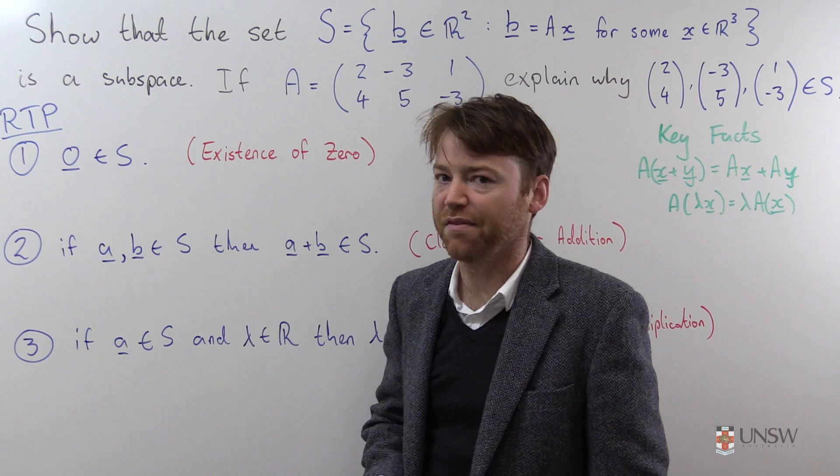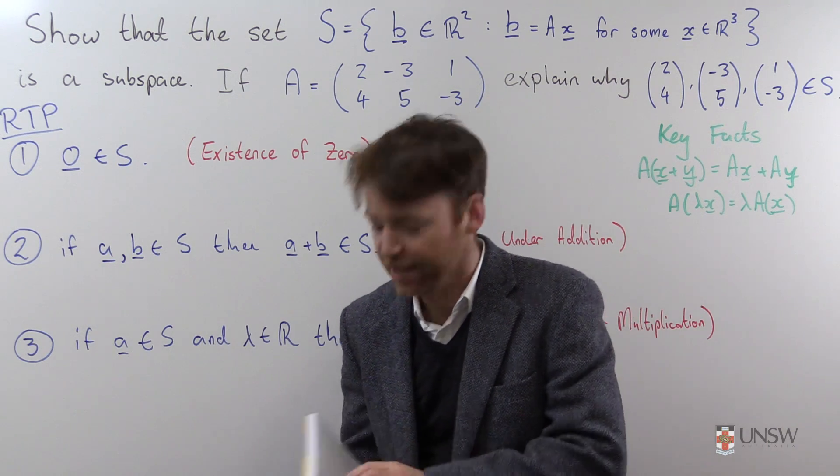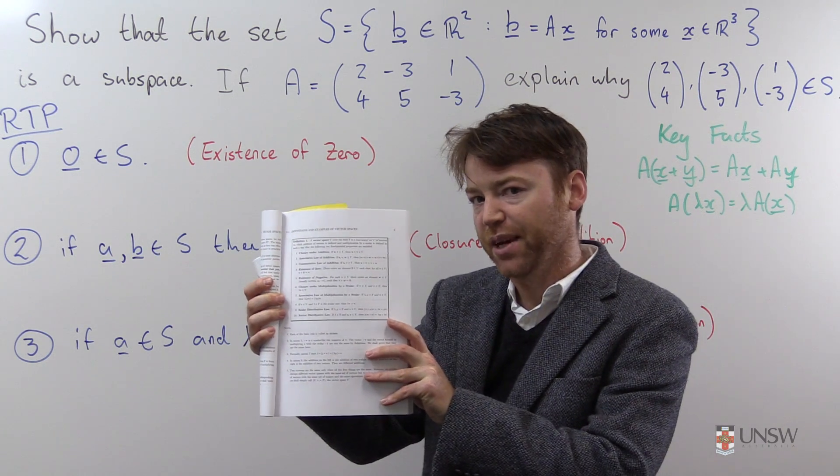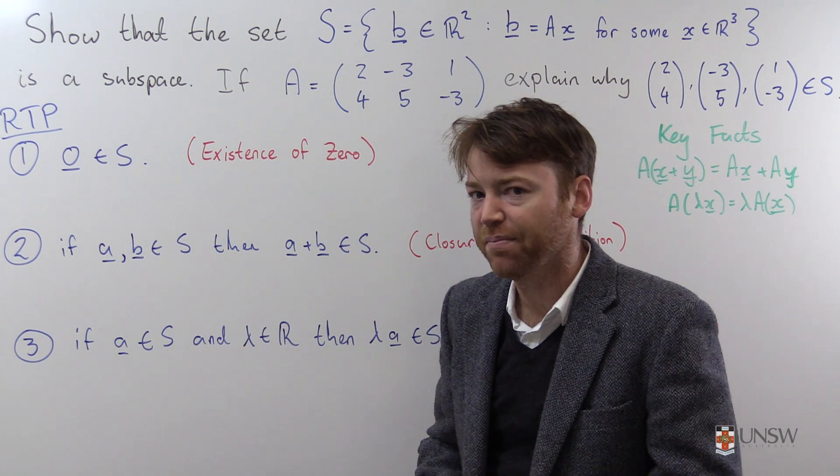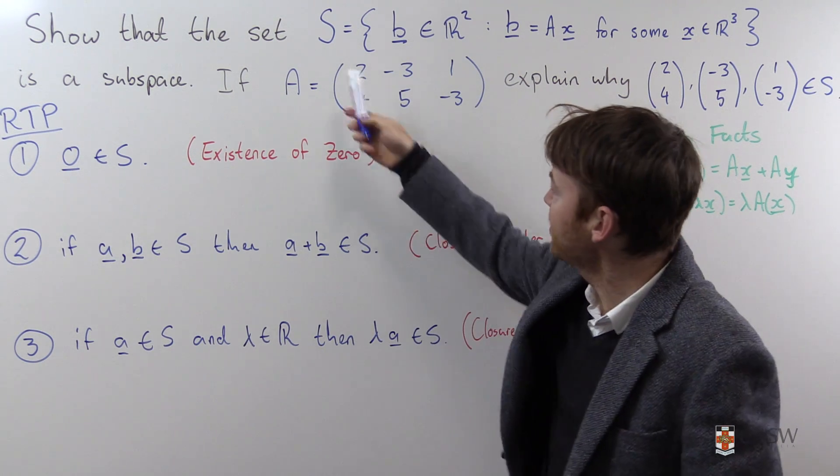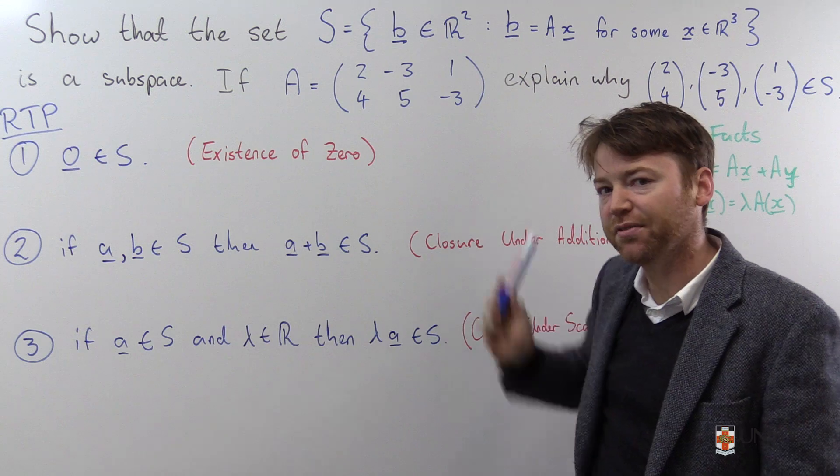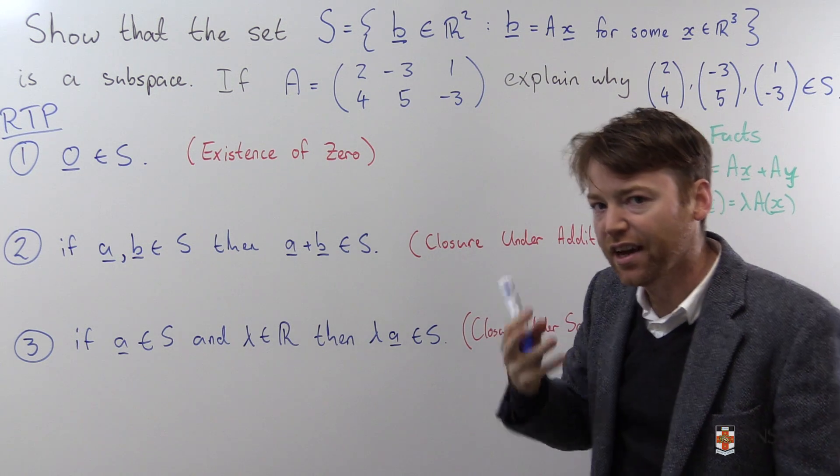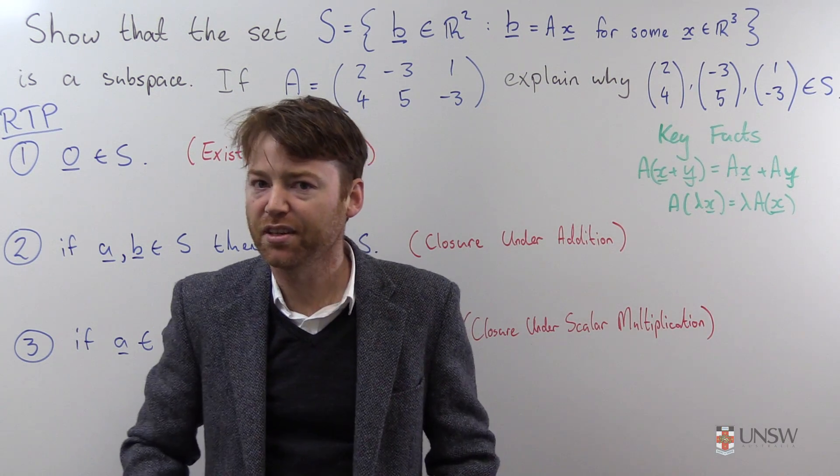Ordinarily to show that a set is a vector space you need to show 10 things, the 10 things listed on page 3 of your algebra notes. But because S lives inside a larger vector space R2, we inherit most of these 10 properties for free.